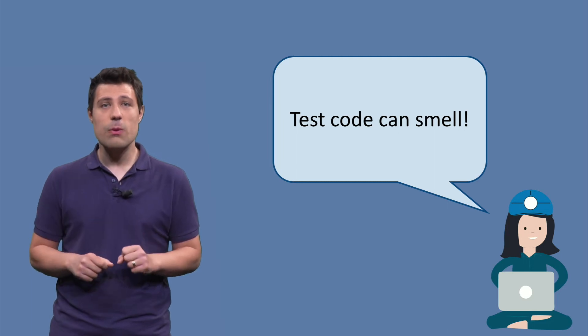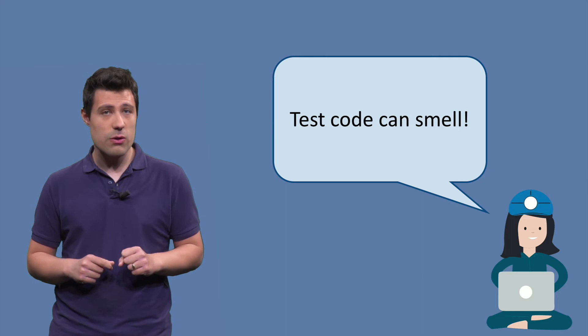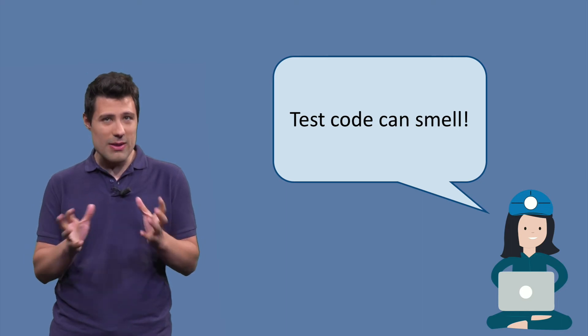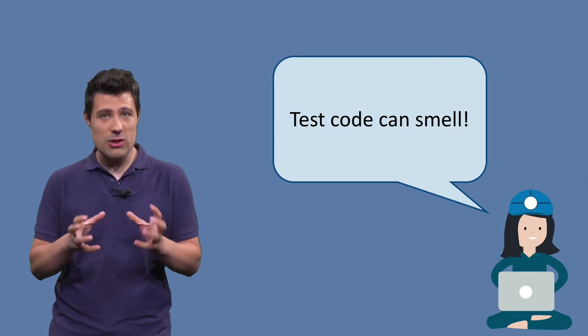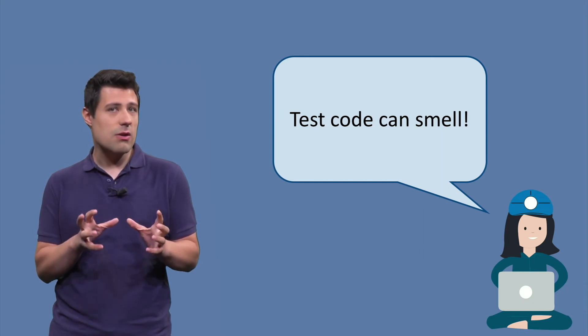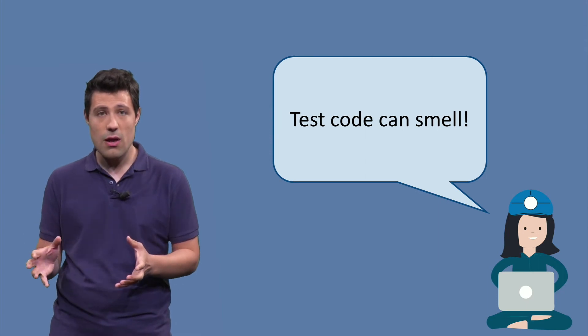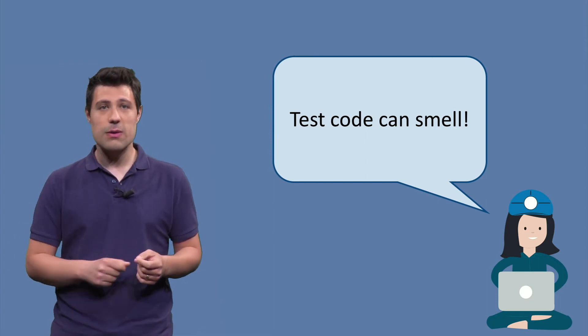Can you think about possible smells for test code? You have been writing lots of test code in this course. Can you think of possible implementation decisions you took that made your test suite less readable or hard to maintain? Something that you didn't like in the Arrange part of the test or in the Assert part of the test? Pause this video and write your thoughts in a piece of paper.